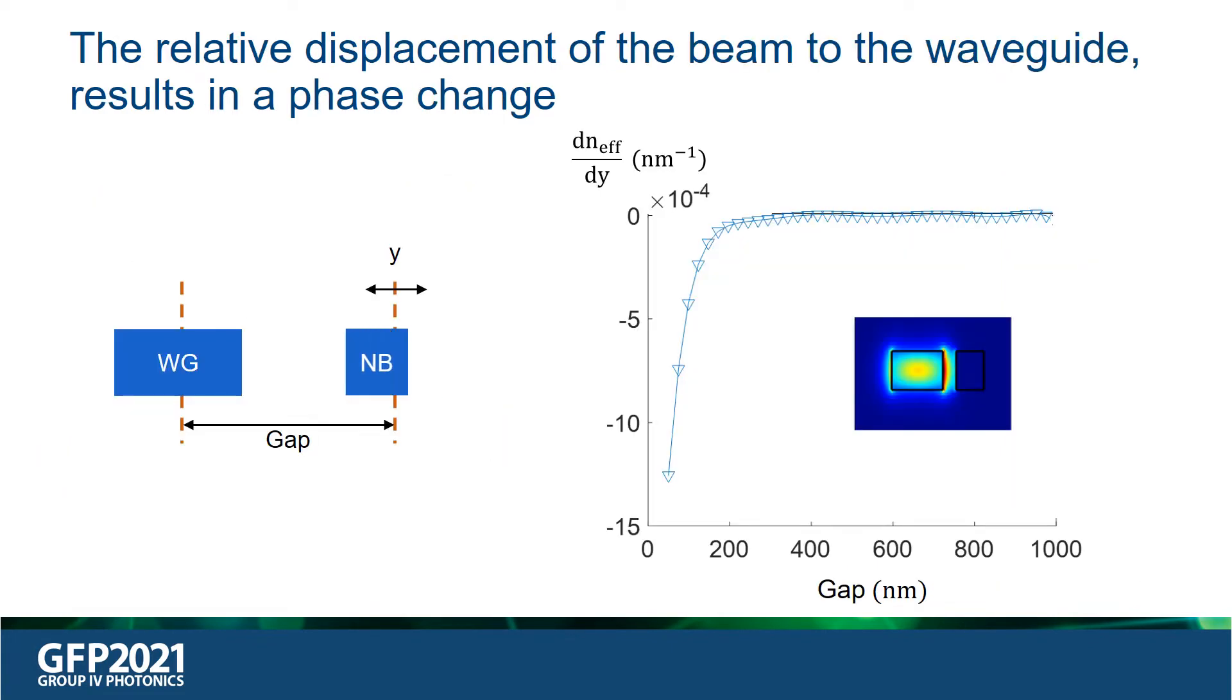The transduction principle of the phase shifter is that the 450 nm waveguide supports a fundamental TE optical mode, which evanescently couples to the thin nanobeam as shown in the inset on the right. Due to the relative displacement of the beam to the waveguide, as shown in the animation, the effective index of the optical mode is perturbed, which results in a phase change. A plot of the change in the effective index per nanometer of displacement of the beam as a function of the gap is shown. We observe that as the gap reduces, the change in the effective index increases. For our device, the gap can be changed or reduced by actuating the comb drive.